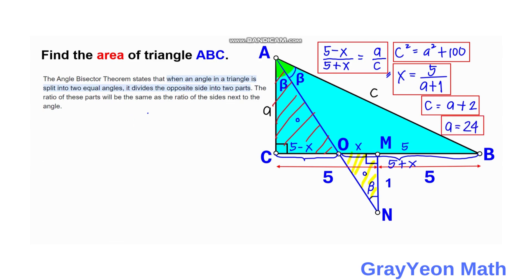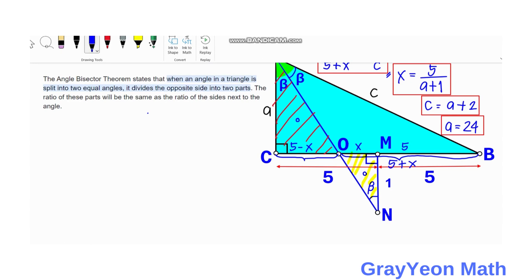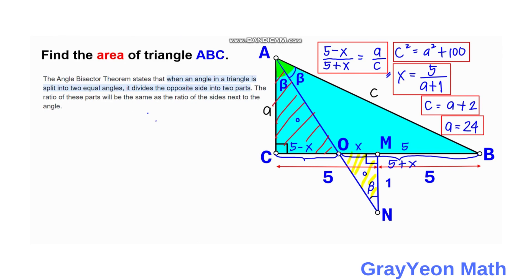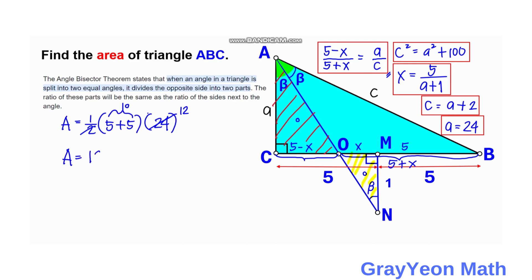Now that we have A = 24, which is the height AC of the triangle, we can find the area. Area equals one-half times base times height. The base is 10 (since 5 plus 5), and the height is 24. So the area equals one-half times 10 times 24, which is 120 square units. That is our answer.